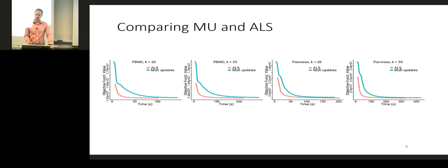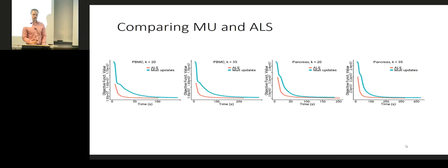The algorithm we ended up going with was the ALS algorithm — also preferred by Park in their implementation of NMF. Since you're solving the coordinate updates exactly on each iteration, it decreases the objective function very quickly. A benchmark shows how the multiplicative updates approach compares with ALS for different values of K on two single-cell datasets — a PBMC dataset with about 12,000 cells and a pancreas dataset with about 10,000. ALS converges much more rapidly, and in many cases achieves a lower objective value than multiplicative updates, converging in around two to four minutes.